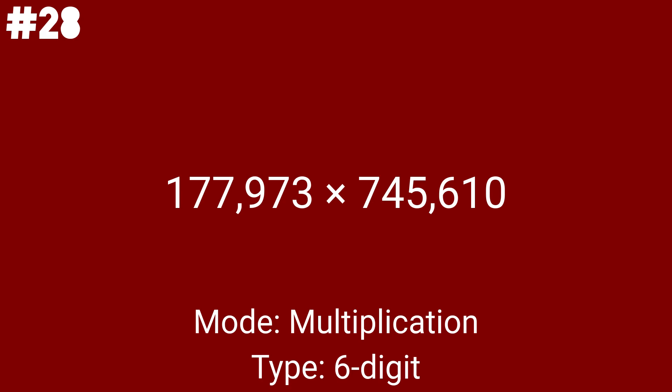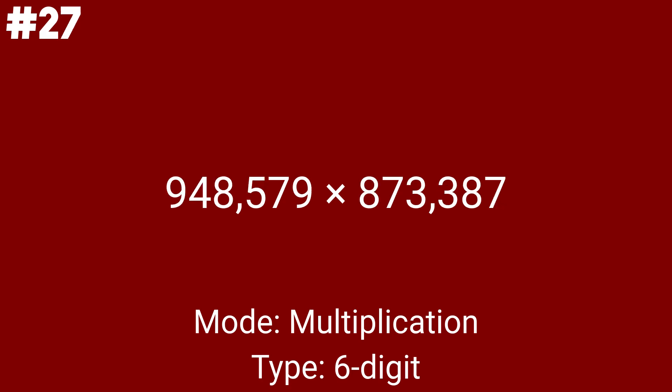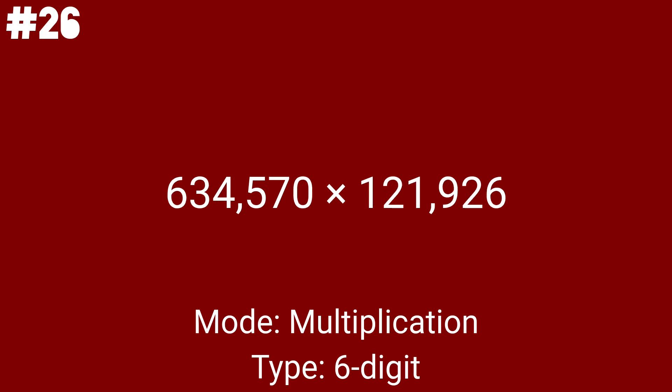After that, we go to division. 948579 times 8733387 will be the penultimate multiplication problem. Do you know how far we've come? After all, we are after problem number 29. And 634570 times 121926 is the final multiplication problem of the day. But it's not over yet — let's move on to the division problems.